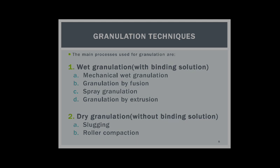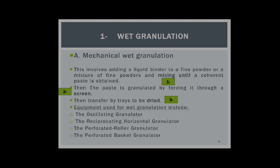The main processes used for granulation: wet granulation by binding solution — such as mechanical wet granulation, granulation by fusion, spray granulation, or granulation by extrusion; and dry granulation — by slugging or roller compaction. Mechanical wet granulation involves adding a liquid binder to fine powders and mixing them until a paste is obtained.